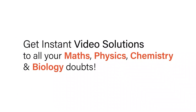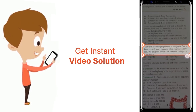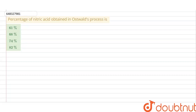With DoubtNet, get instant video solutions to all your maths, physics, chemistry and biology doubts. Just click the image of the question, crop it, and get an instant video solution. Download the DoubtNet app today. In this video, we have a question: what is the percentage of nitric acid obtained in the Ostwald process? The options given are 61, 68, 74, and 82 percent.